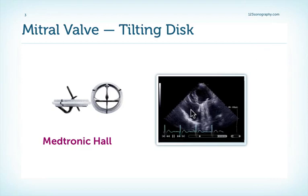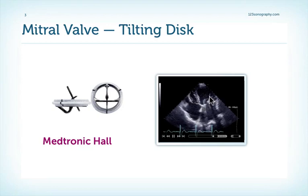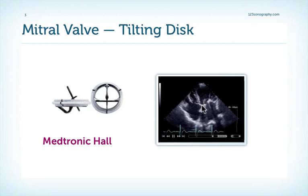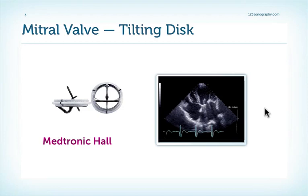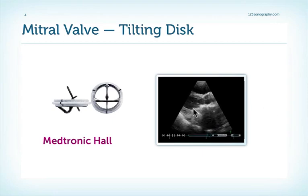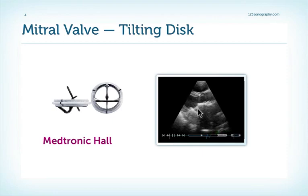We can first of all note that there is a lot of shadowing of the left atrium, which is typical for mechanical valves, and we can only see one disc. This might be difficult to visualize, so you have to rotate the transducer until you really see this one disc open and close nicely. Here's another patient, also with a tilting disc valve, this time a parasternal long axis view. Again, you can see that there is only one disc which opens and closes, and you can see the shadowing of the mechanical prosthesis.